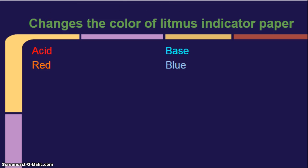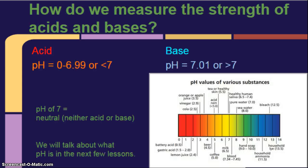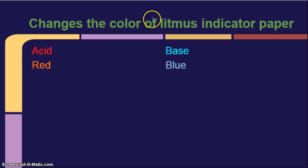New line. Changes the color of litmus indicator paper. Acids turn red. Bases are blue. And we're going to talk about litmus indicator paper. And so, for now, just write it down, because it's going to be coming up in another section.